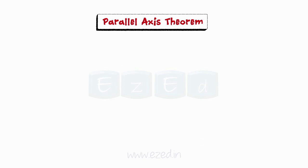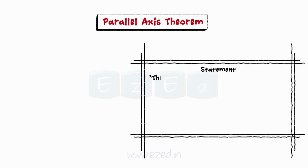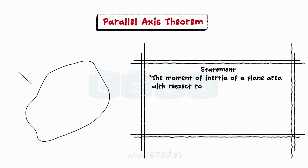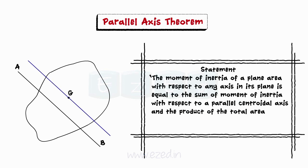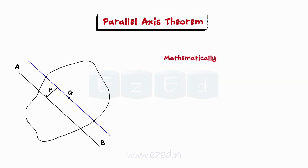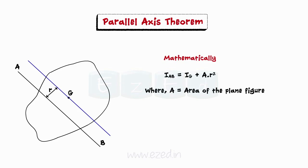Now, we will take a look at some of the basic theorems used to find the moment of inertia of plane areas. Parallel axis theorem: it states that the moment of inertia of a plane area with respect to any axis in its plane is equal to the sum of moment of inertia with respect to a parallel centroidal axis and the product of the total area and the square of the distance between the two axes. Mathematically, IAB equals IG plus AR², where A is the area of the plane figure and R is the perpendicular distance between the two axes.